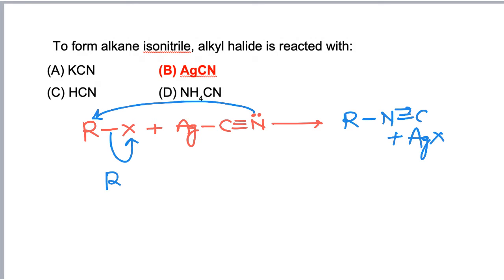Now if we use KCN instead of AgCN, KCN is an ionic compound and this ionic compound has a negative charge on the carbon atom.